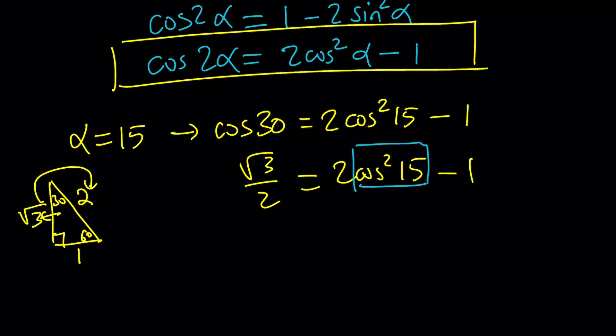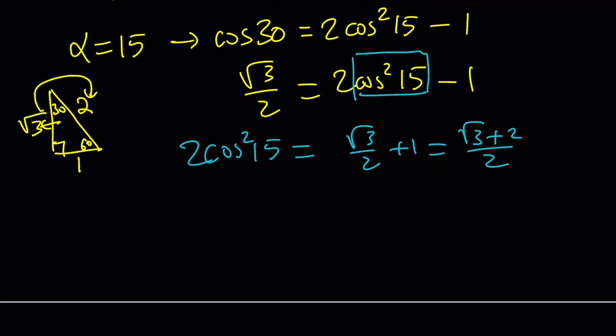So let's go ahead and set this equal to √3 over 2. And our unknown is cosine 15 here. So let's solve for it. Add 1 to both sides. cos²15 times 2 is going to be √3/2 + 1, which is (√3 + 2)/2. And then divide both sides by 2. cos²15 is going to be (2 + √3)/4.